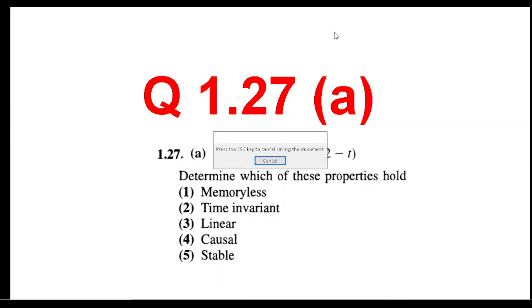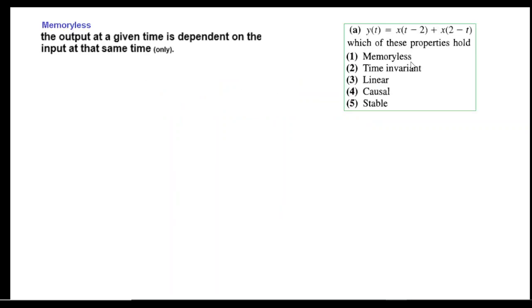In this video we will solve question 1.27 part A from Oppenheim's book Signals and Systems. This is an end-chapter problem requested by a student. The properties we will verify are: memoryless, time invariance, linearity, causality, and stability.